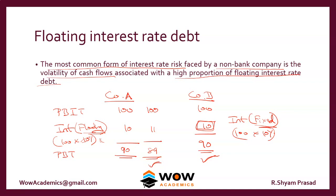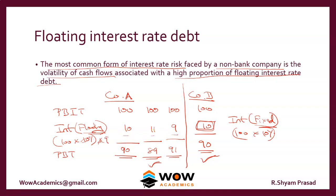Company A has a fluctuating interest rate; Company B has a fixed interest rate. Fixed interest rate gives you certainty — you know you'll pay 10% for the next five years. With a floating rate, you pay a different rate each year. If the rate falls to 9% you're happy; if it rises to 11% you have to worry. So floating rate creates uncertainty in the interest payments.